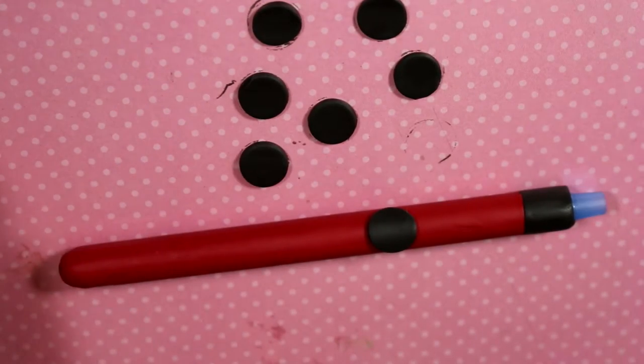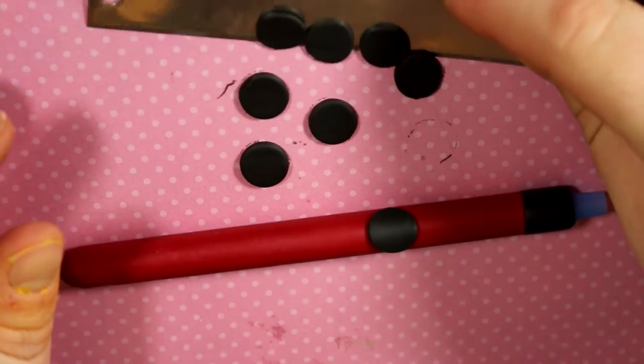So I'm just going to take the black circles and place them randomly throughout the red clay.